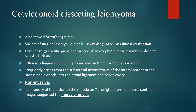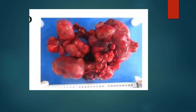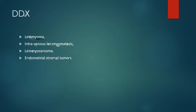On MRI, it typically appears similar to the muscle signal intensity on both T1 and T2, with post-contrast enhancement indicating muscular origin. This is the surgical specimen, which reveals the distinctive grape-like appearance. Differential diagnosis includes leiomyoma, intravenous leiomyomatosis, leiomyosarcoma, and endometrial stromal tumors.